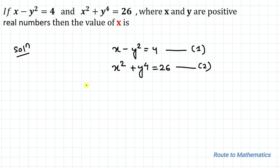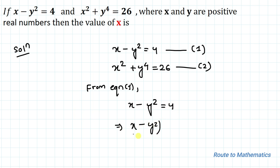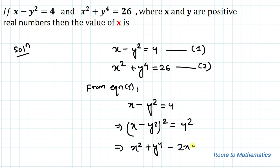In the next step, let's consider equation 1 first. From equation 1, we have x minus y² equals 4. Now squaring both sides, we have (x minus y²)² equals 4². Applying the algebraic identity of (a minus b)², we can write x² plus y to the power 4 minus 2xy² equals 16.